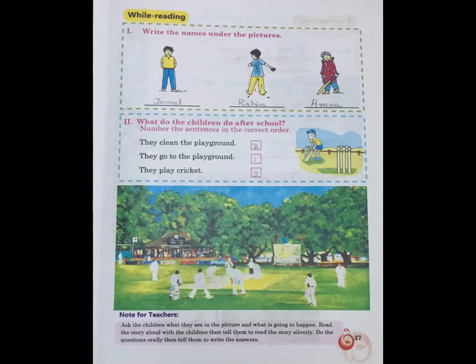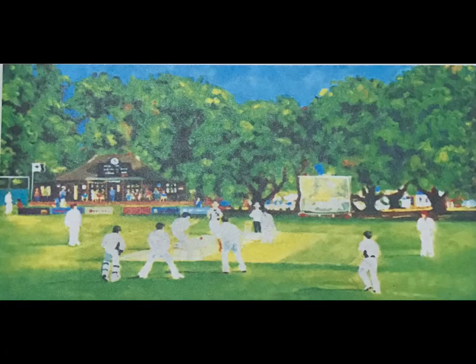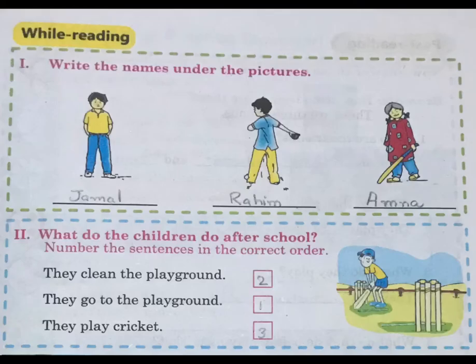Now look at page number 27. Question number 1: Write the name under the pictures. I have done it for you. First one is Jamal, second is Raheem, third is Amna.